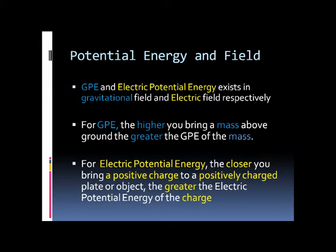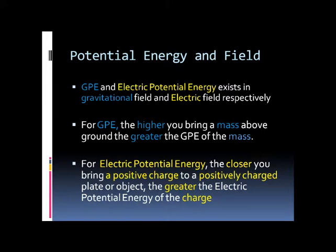The same applies for Electrical Potential Energy. The closer you bring a positive charge to a positively charged plate, the greater the electrical potential energy of that charge. If you change 'closer' to 'further', you must change 'greater' to 'lesser' — the further two positive charges are, the less the electrical potential energy. Also, if you change the plate to a negatively charged object and move a positive charge towards it, you are decreasing the electrical potential energy of that charge.